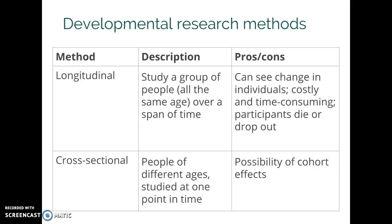But we do have to worry about what are called cohort effects. A cohort effect means that if we see differences between people in different age groups, maybe it's age that made the difference — but maybe it's because those people grew up under different social, historical, and economic circumstances. For example, if I were to measure attitudes about social media and survey people from age 10 up to age 80, and find that 10 year olds and 80 year olds have different attitudes, maybe age is making the difference. But it's also very likely that it has to do with the fact that the 80 year olds spent most of their lives without the existence of social media, while for a 10 year old, social media has already always been there.